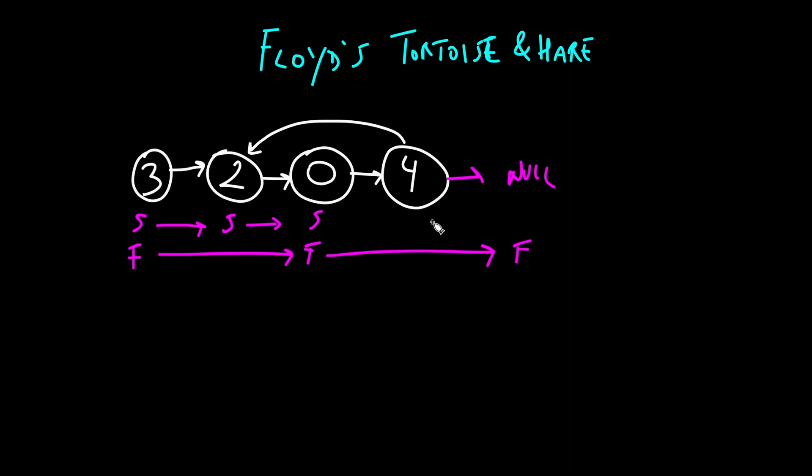But what if there was a cycle? So if there was a cycle, this is how the next iteration will look like. Fast is going to move by two. So it's going to go at four and then at two. So fast is now going to be here and slow is going to be here.